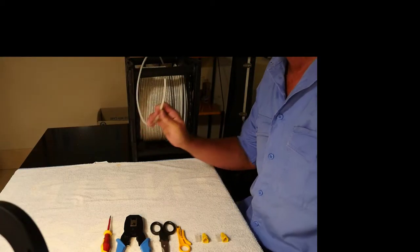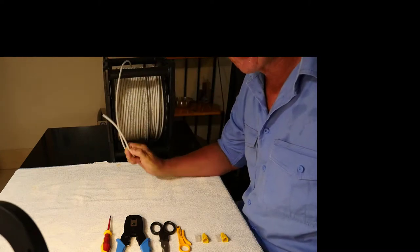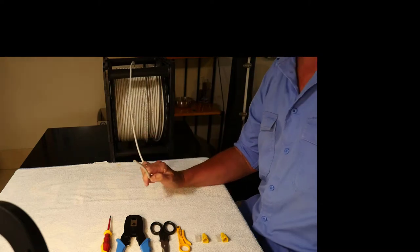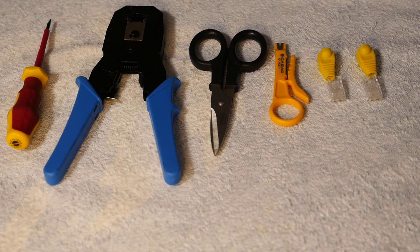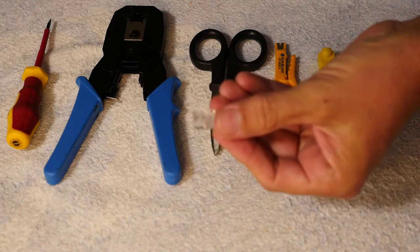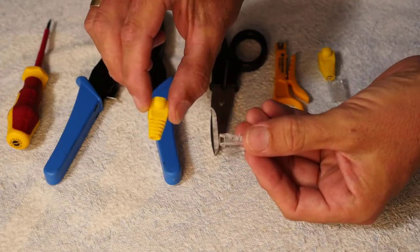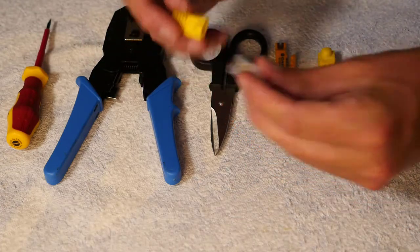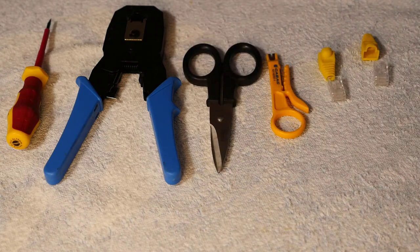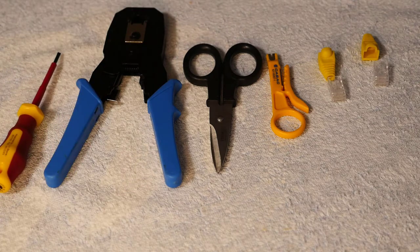Okay, so the first thing we want to do is grab our reel of cable. We use Krone CAT6, which is a gray cable. Here we have the tools of the trade: an RJ45 data connector, a boot cap that goes over the end when we finish, sheath strippers, scissors, crimps - very very important - and a screwdriver.